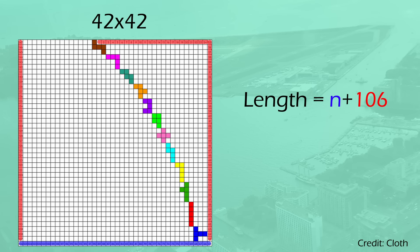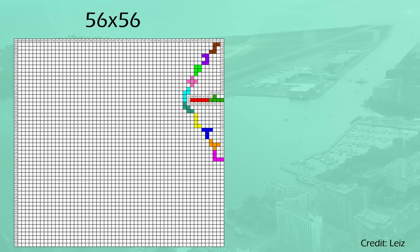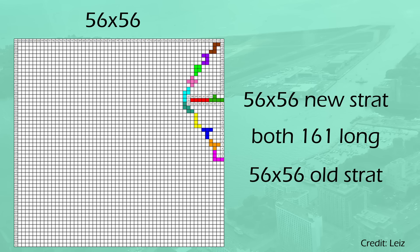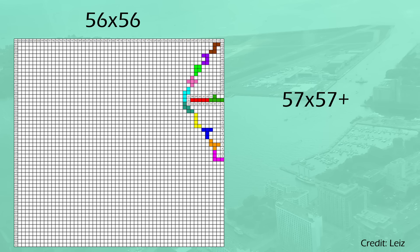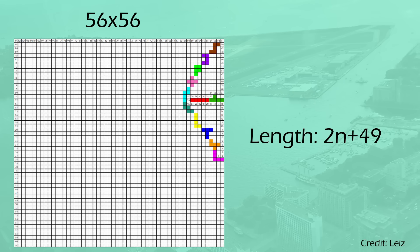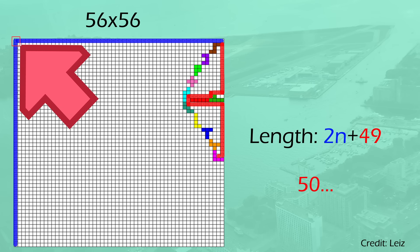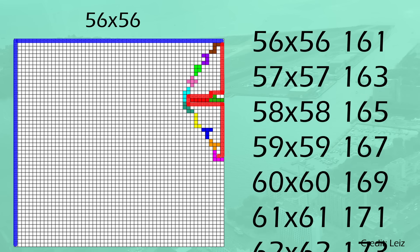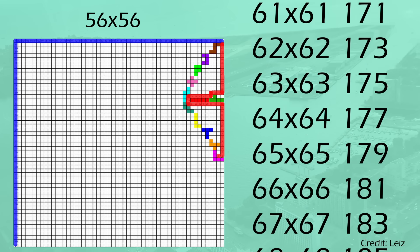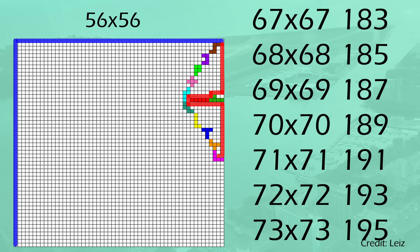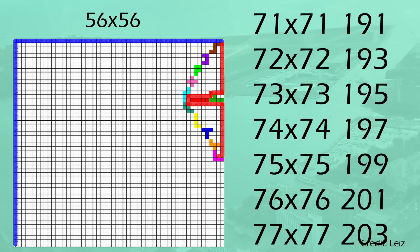You'd think that would forever be the optimal solution, but no. It's only until 56x56 where we get this thing found by Lees. At 56x56, this new strategy and the previous strategy yield the exact same number of cells at 161. But for 57x57 and above, this new strategy reigns supreme, giving us a size of 2n plus 49 from here on out. This is 1n, this is 2n, and this is 50 cells, but both of the n's share exactly one cell at the corner, so subtracting one from the other cells gives us 49. This is the maximum of what has been found so far — no different strategies above 57x57 have been found that improve the path, although it's very possible that there is something better out there.